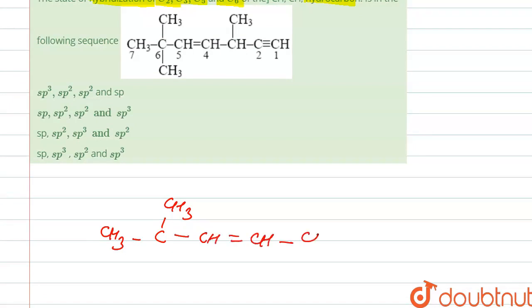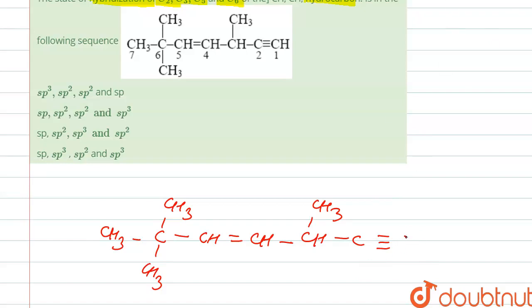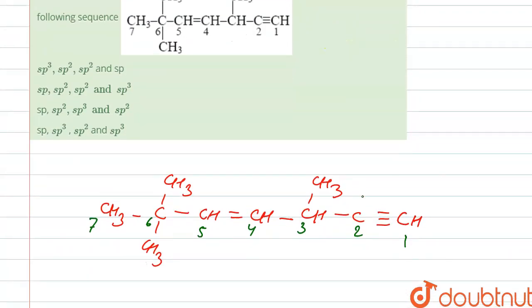Here also CH3. The numbering is like this: one, two, three, four, five, six, and seven. So we have to find out the hybridization of C2, C3, C5, and C6.